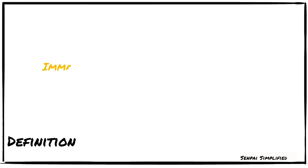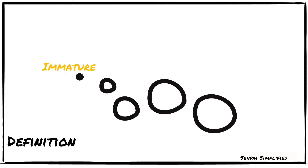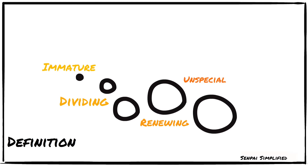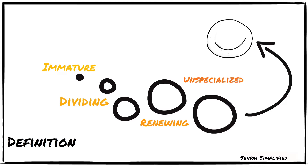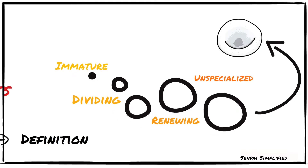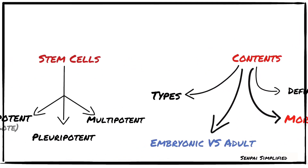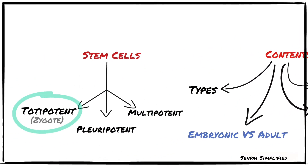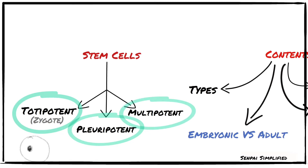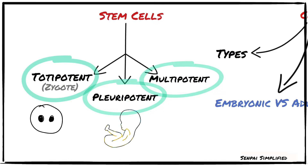What is a stem cell? Stem cells are immature cells capable of dividing and self-renewing. They are unspecialized and have the potential to become specialized into different types of cells. There are three main types of stem cells: totipotent stem cells, pluripotent stem cells, and multipotent stem cells. The zygote is a totipotent stem cell, and embryonic stem cells are pluripotent.